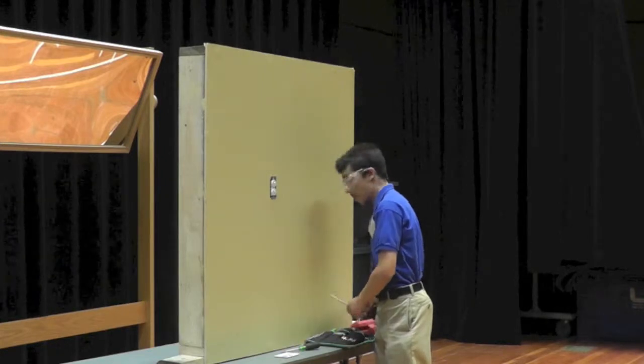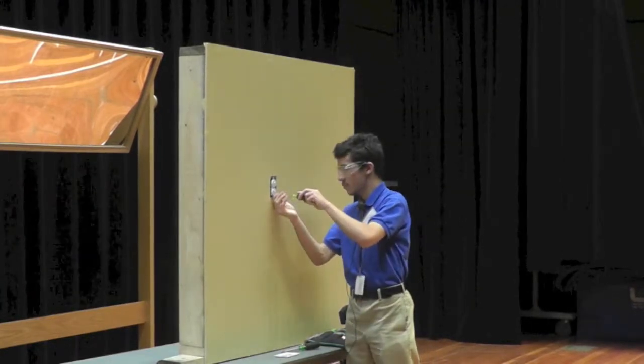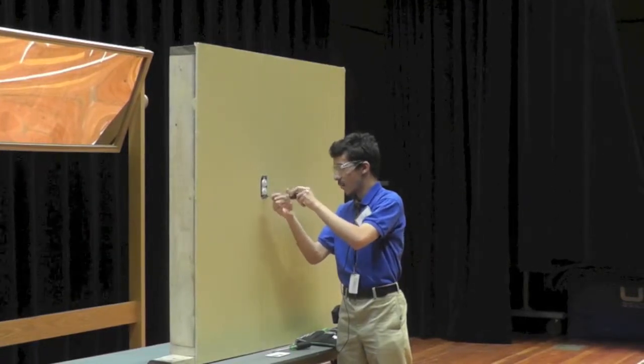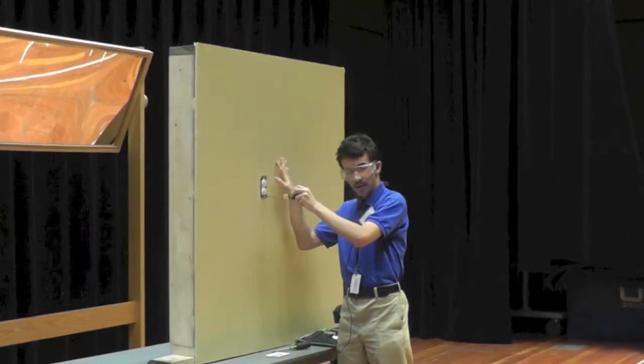Next, we will remove two 8-32 screws that affix the receptacle to the non-metallic outlet box installed behind this wall.